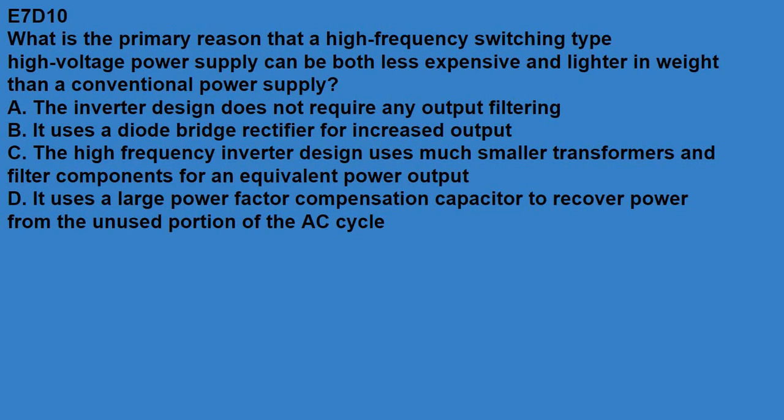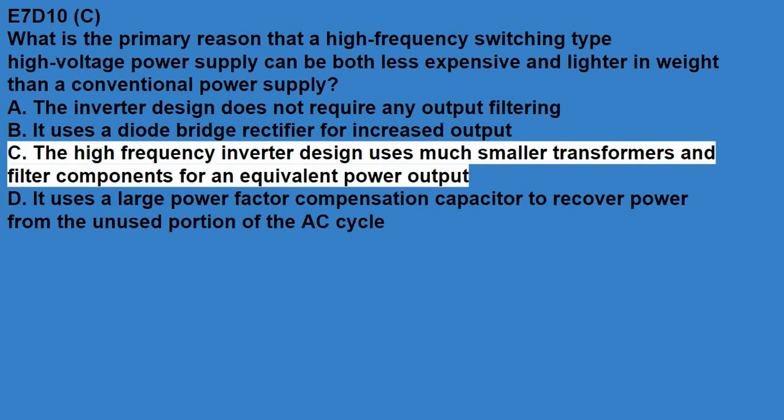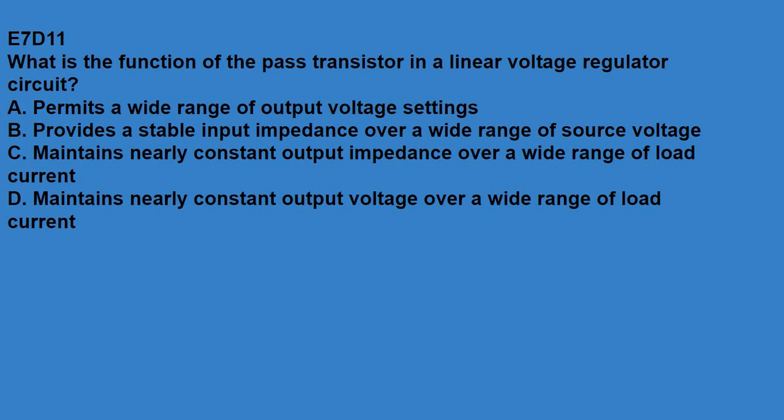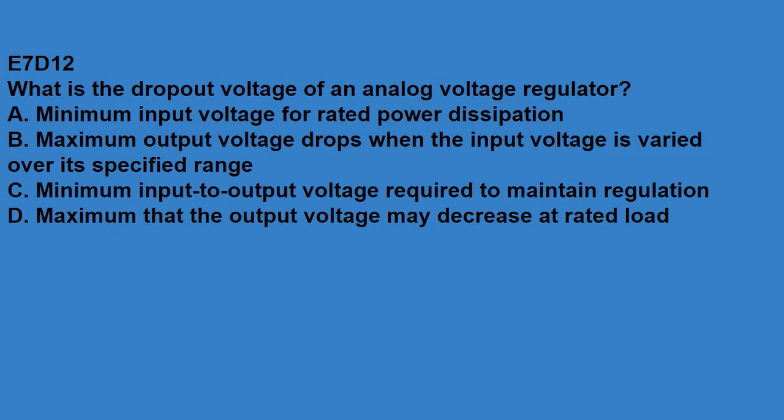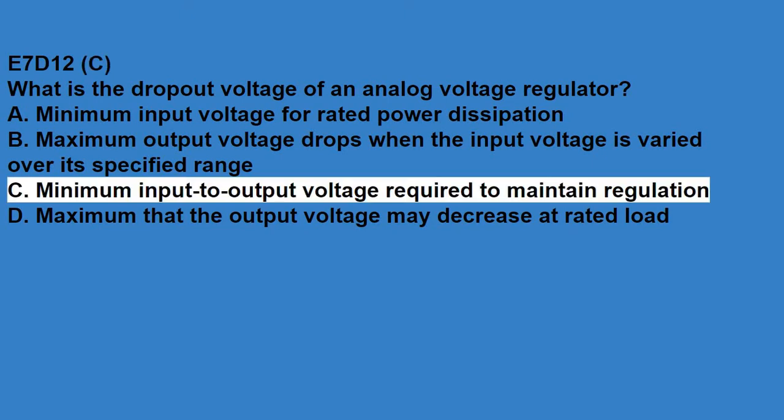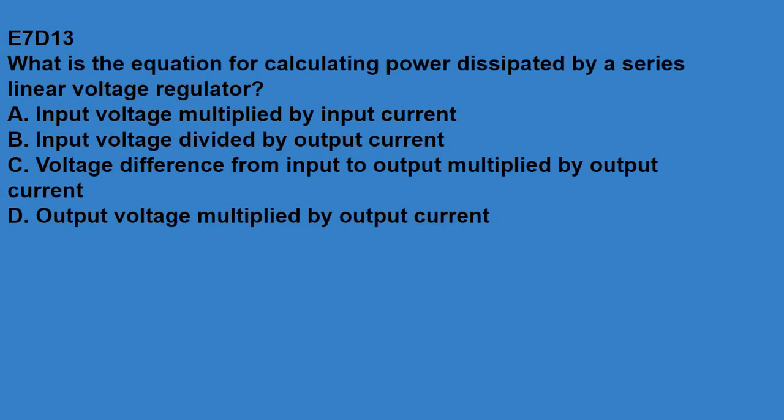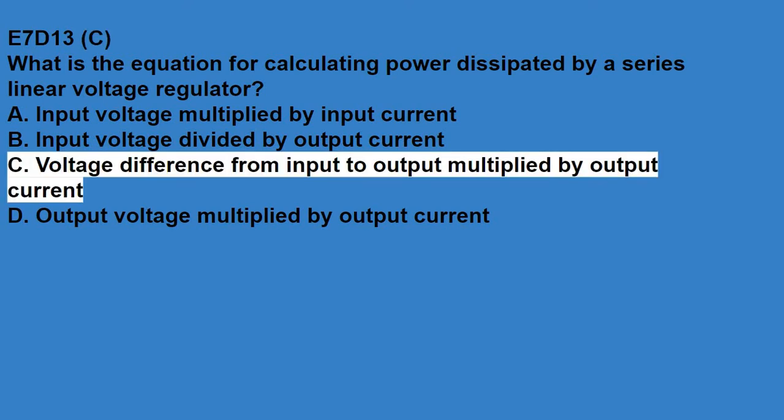E7D10, what is the primary reason that a high frequency switching type high voltage power supply can be both less expensive and lighter in weight than a conventional power supply? The high frequency inverter design uses much smaller transformers and filter components for an equivalent power output. E7D11, what is the function of the pass transistor in a linear voltage regulator circuit? It maintains nearly constant output voltage over a wide range of load current. E7D12, what is the dropout voltage of an analog voltage regulator? The minimum input to output voltage required to maintain regulation.